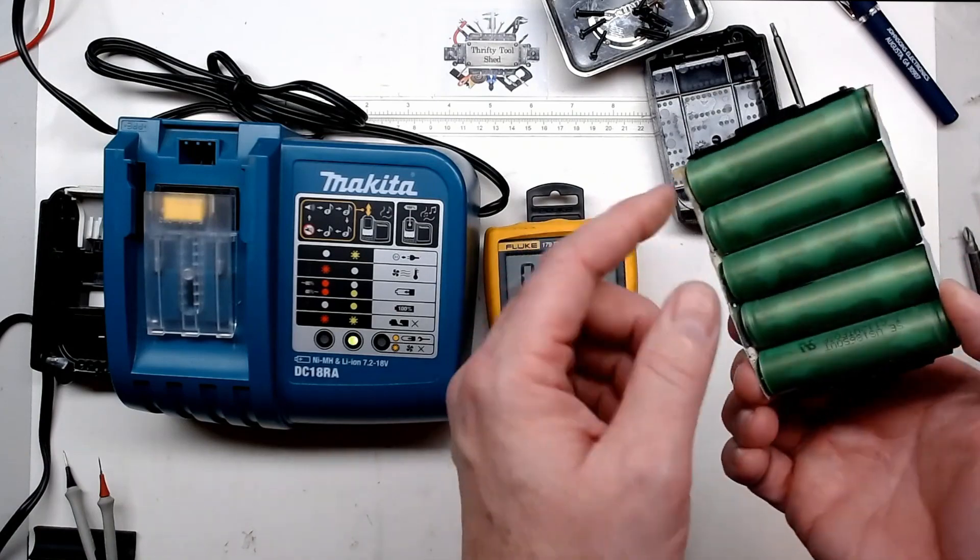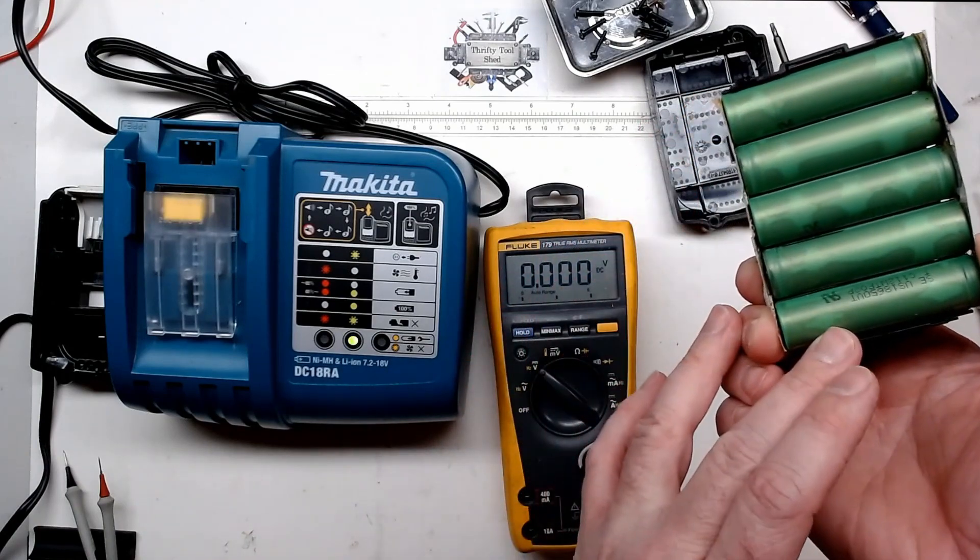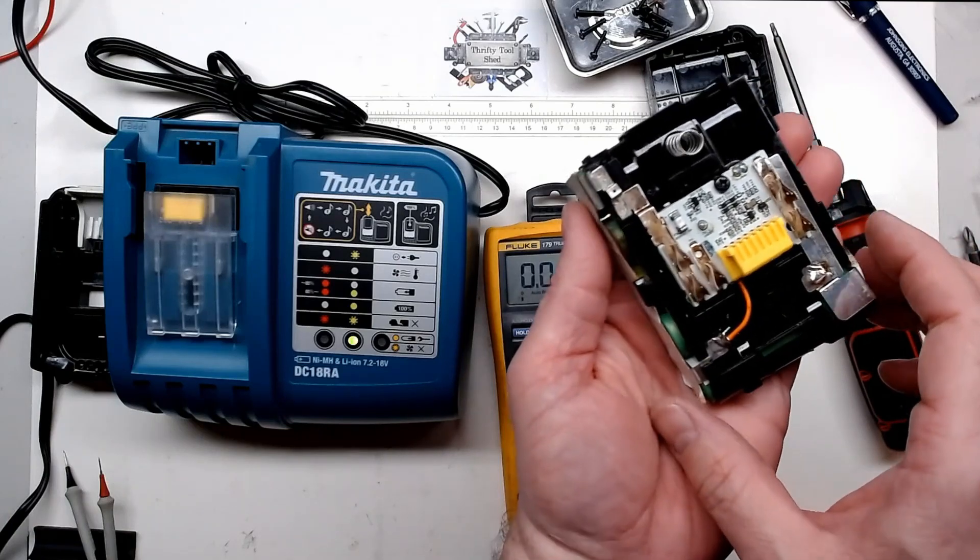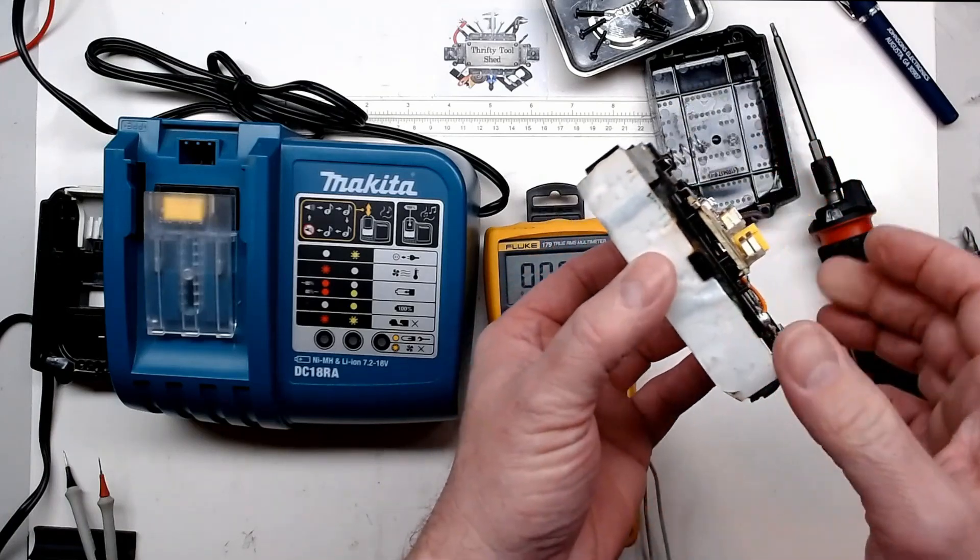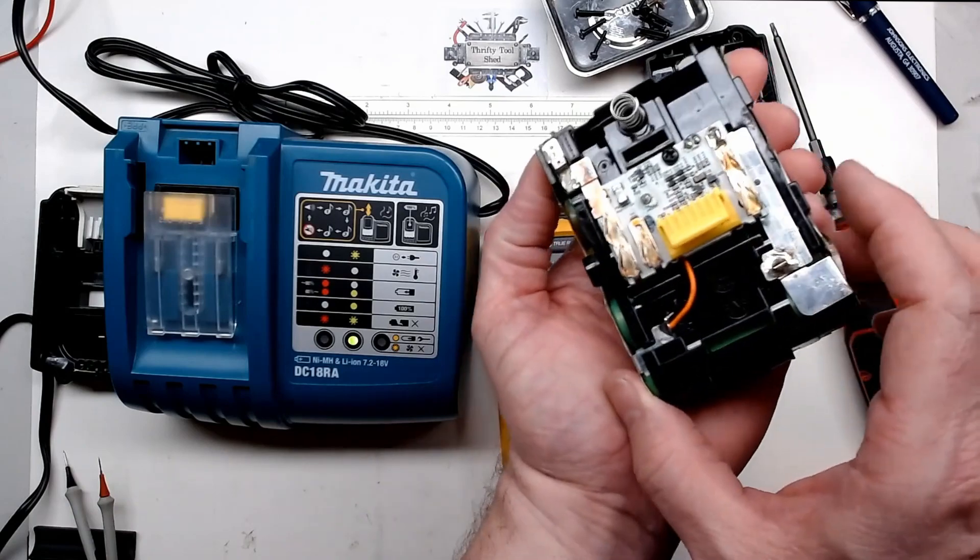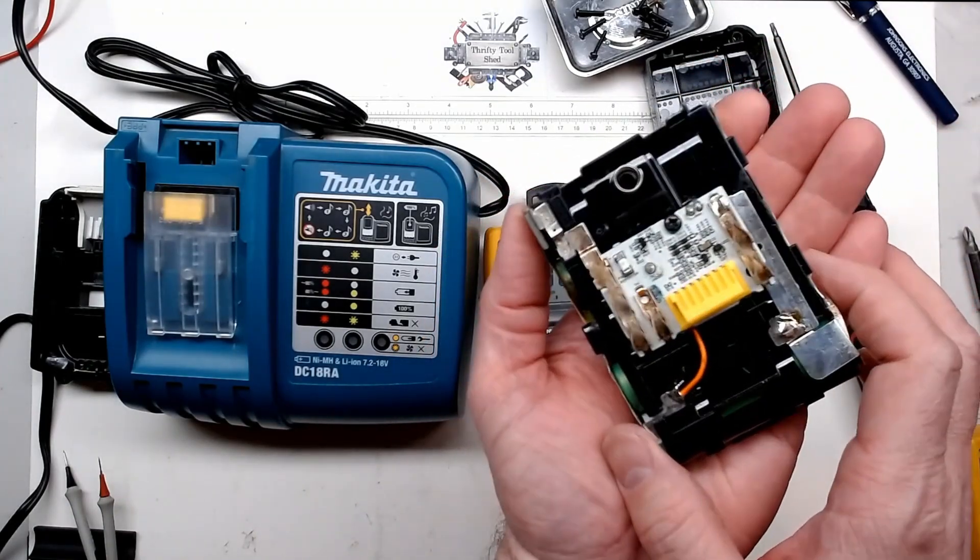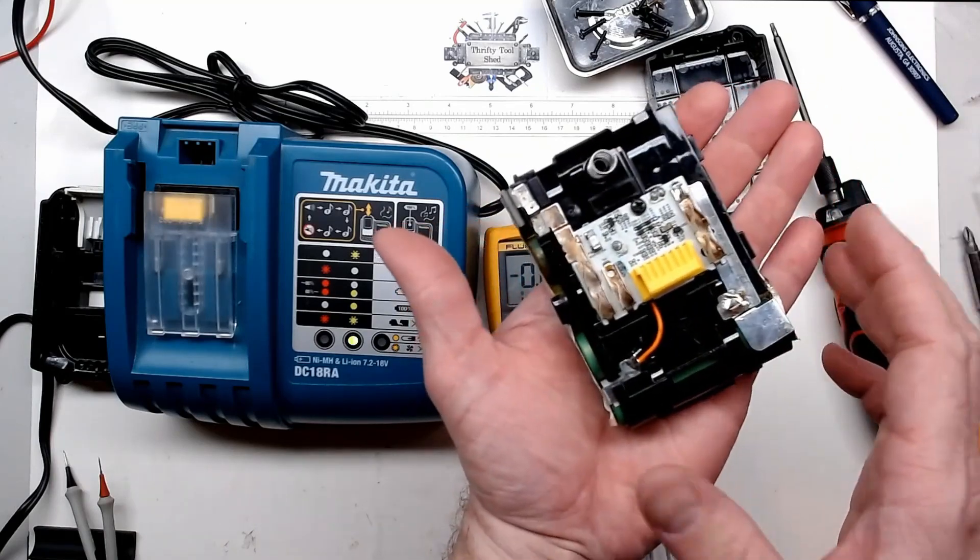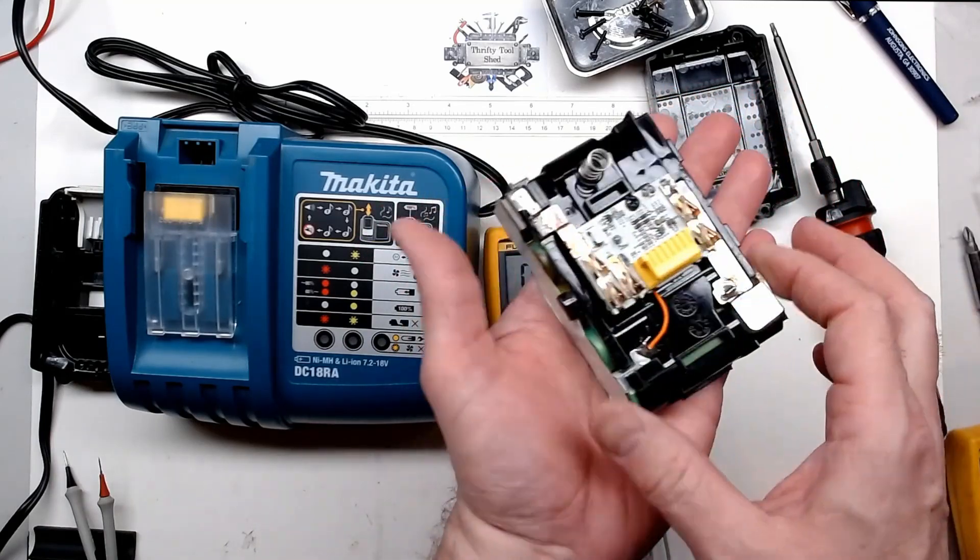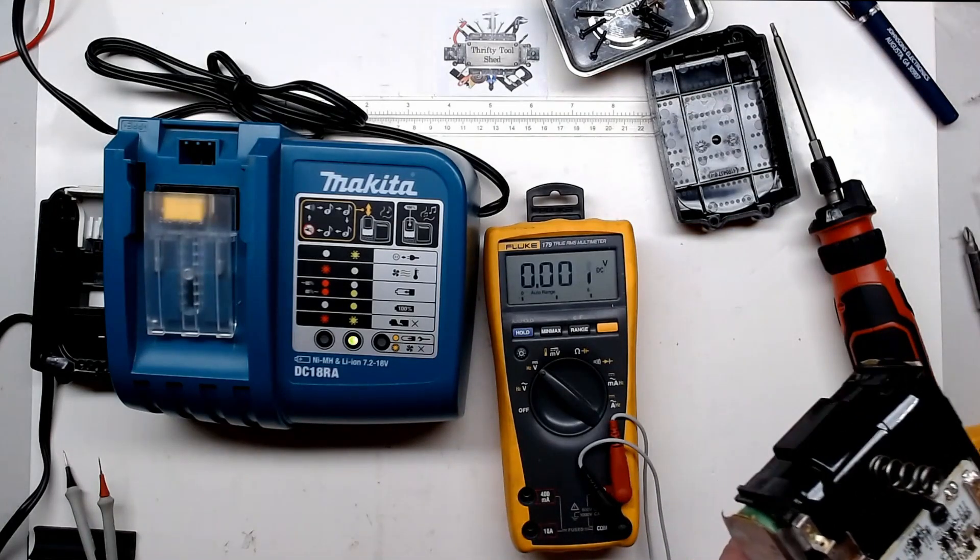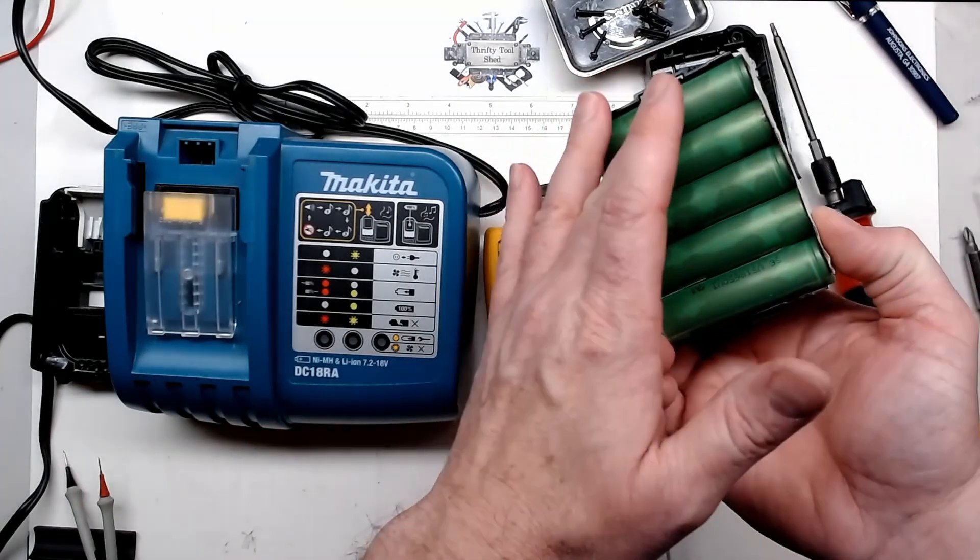But what I'll do is I'm going to replace all five of these with some 1300 milliamp hour cells. I typically solder mine but you can do it however you want—maybe solder, or you can spot weld your cells on, choice is yours. I got several videos showing replacement of cells, so I'm going to put all known good batteries in here and we'll check it out.